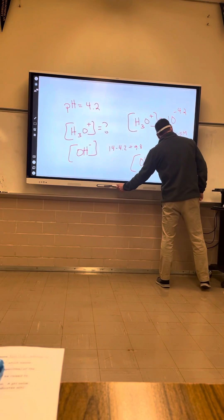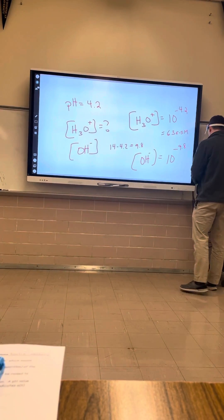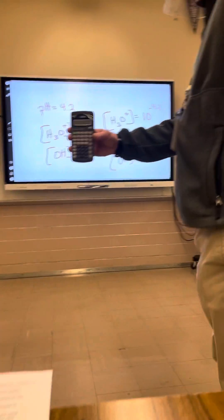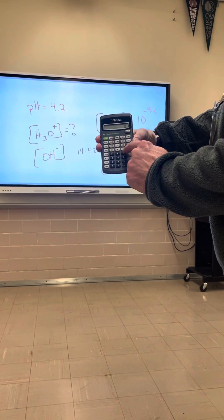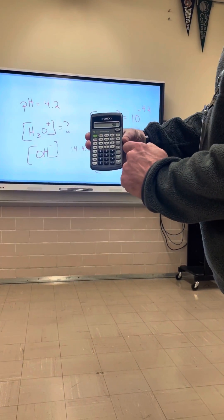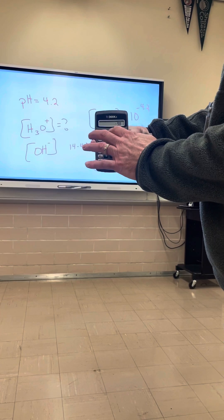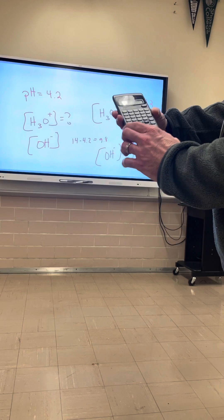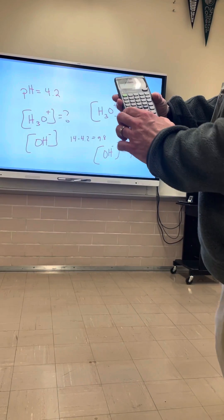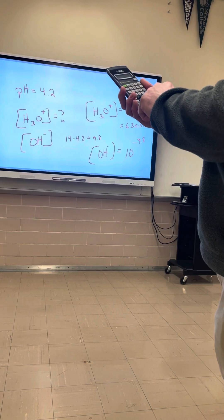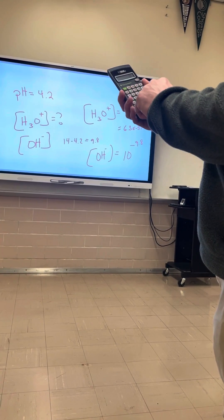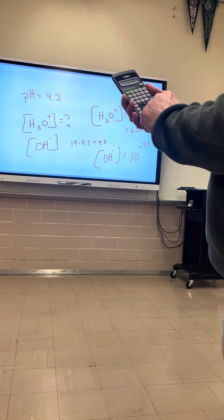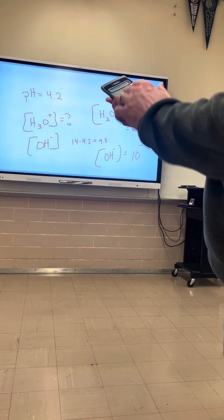And I'll do this on a 30XA calculator. All right, so what we're going to do is we're going to take 9.8, punch that number in first, negative sign, second log, negative sign. That does not look right. 9.8 negative sign, second log. There we go, I got it now. Hit the wrong button there.